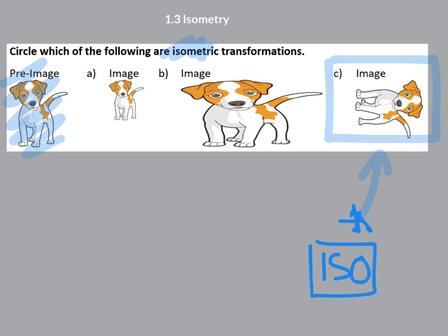Now, this one here, it's the same shape but smaller. This is not isometric. It would be a dilation, though, wouldn't it be? Because the shape is proportional. It's the same shape but just different size.